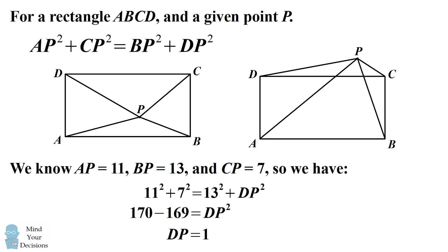So this is a fantastic formula because we can figure out the distance to the fourth corner from knowing the distances to the other three corners. And we don't need to know whether P is inside the rectangle or outside the rectangle.